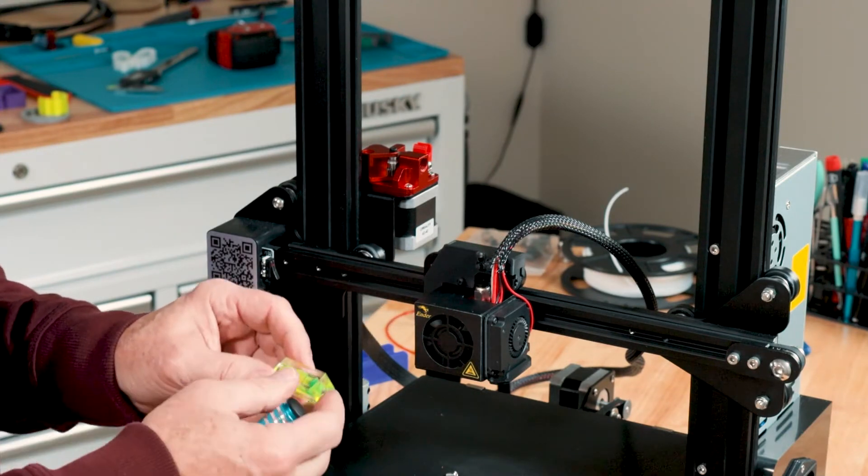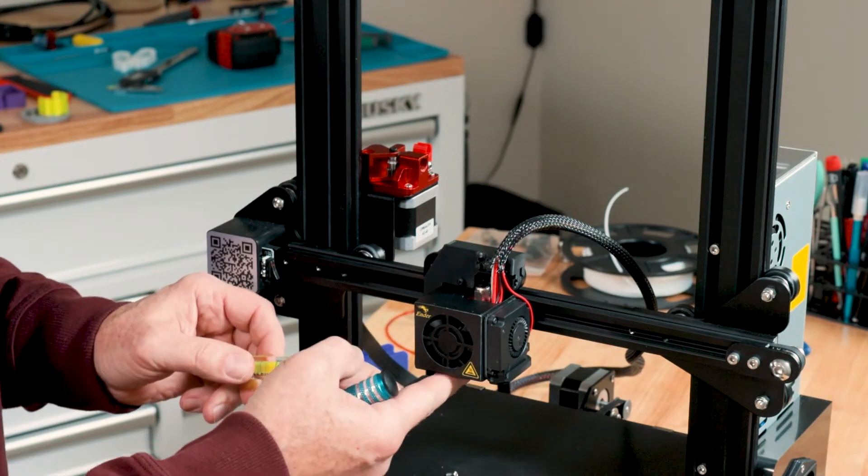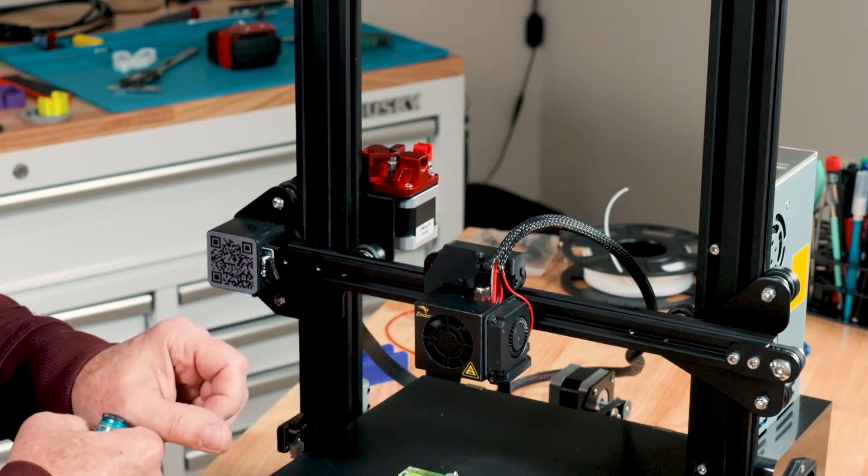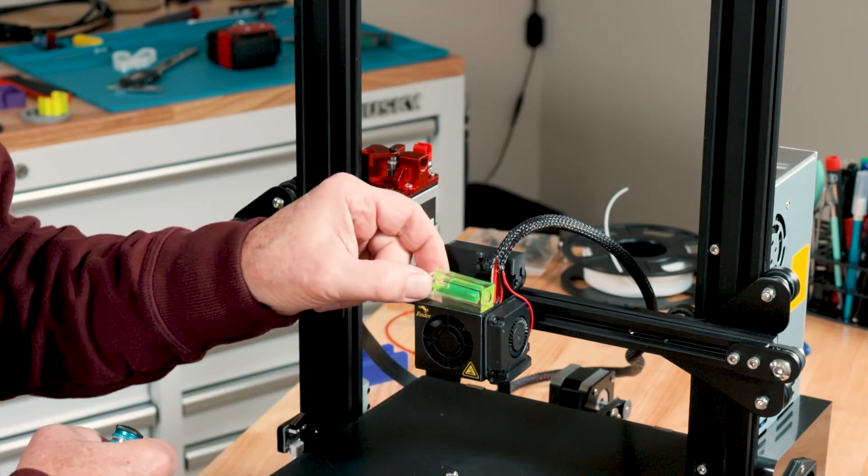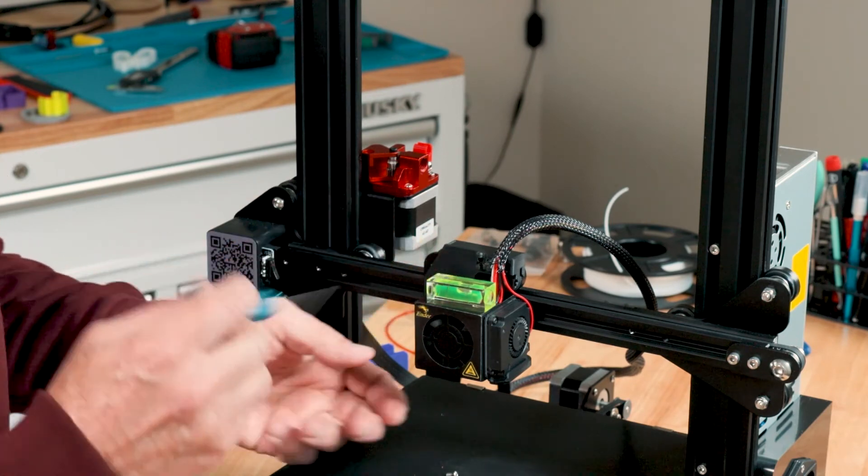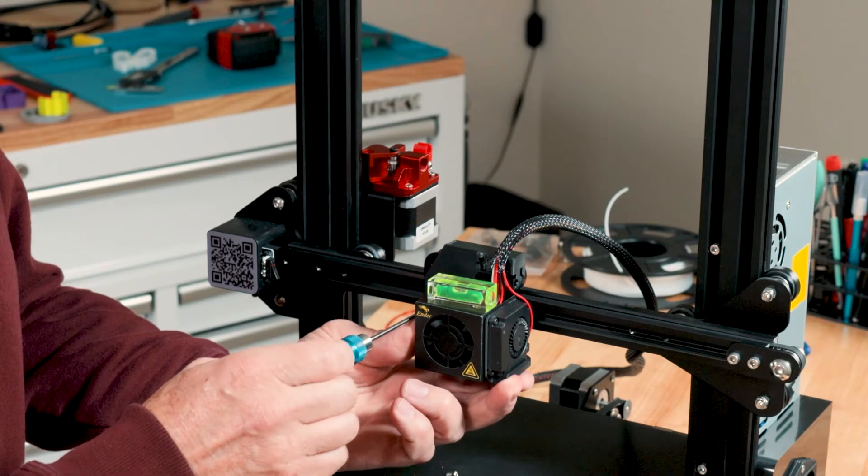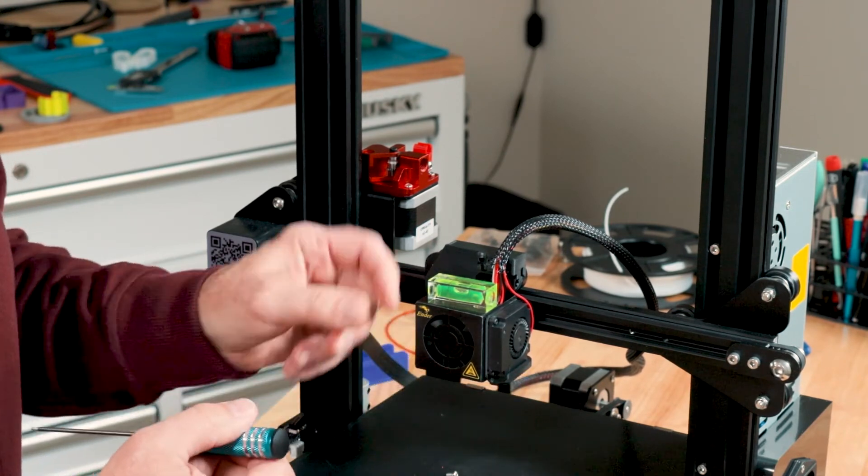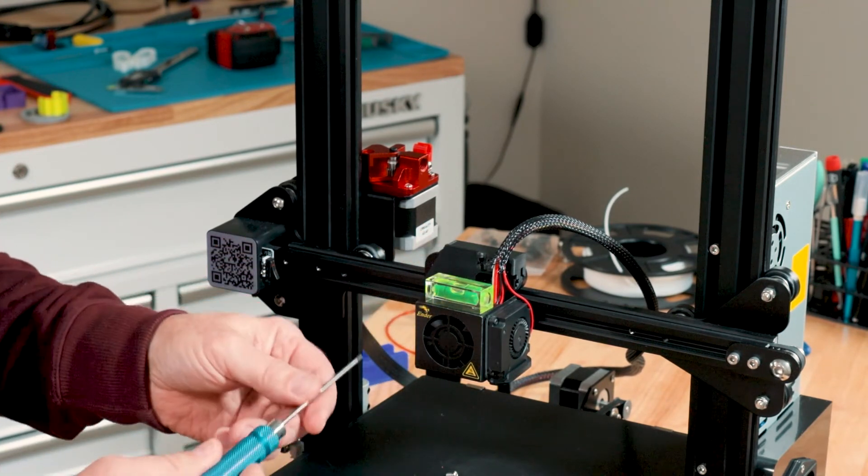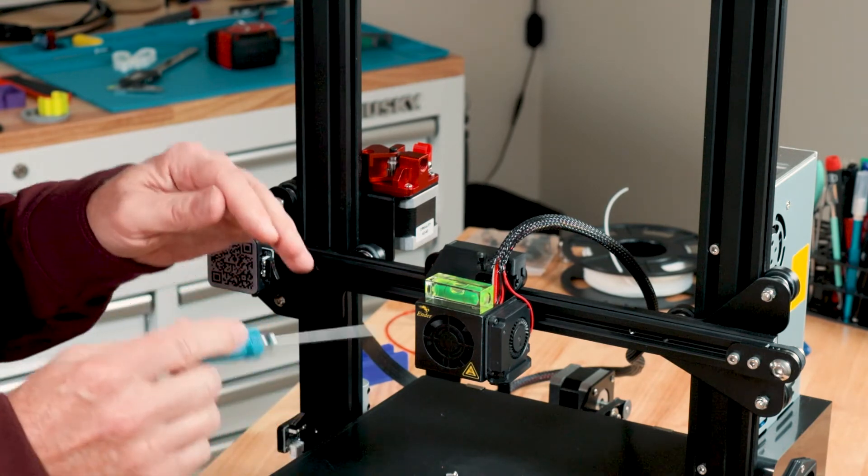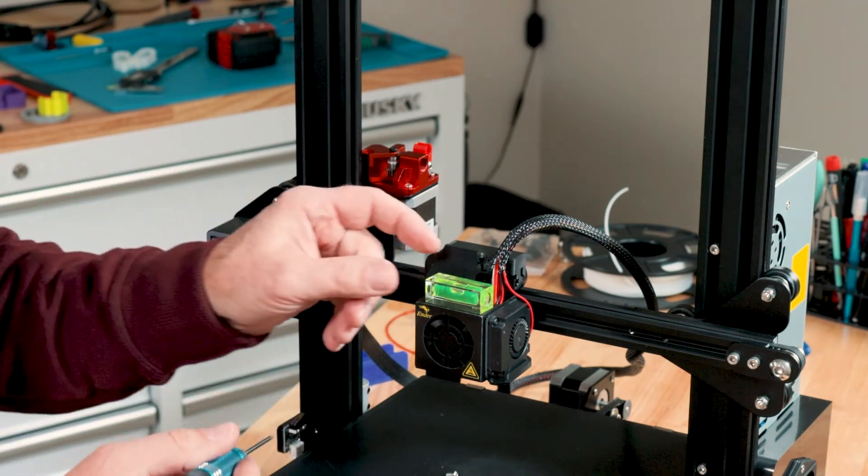Now before you tighten these two screws down I like to make sure that this fan is nice and level. Make sure your printer is on a level surface and then put a small level on the top here and then you want to snug it up with it level. Now what this is going to do is help the airflow be exactly even across so you don't have one airstream higher or lower than the other.